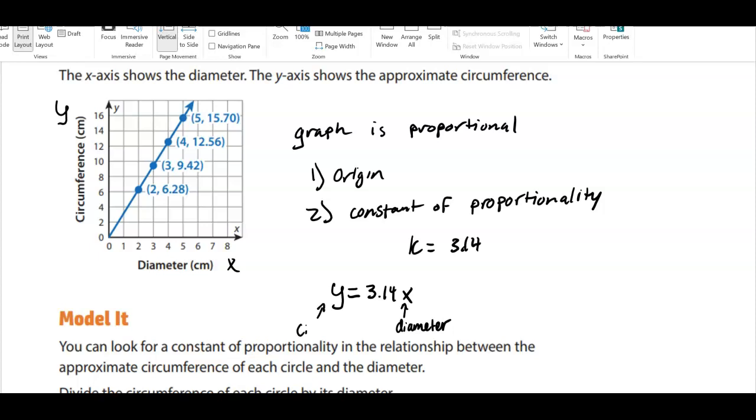On the flip side, if I give you any circumference, which is y, and you divide it by 3.14, you'll get the diameter.